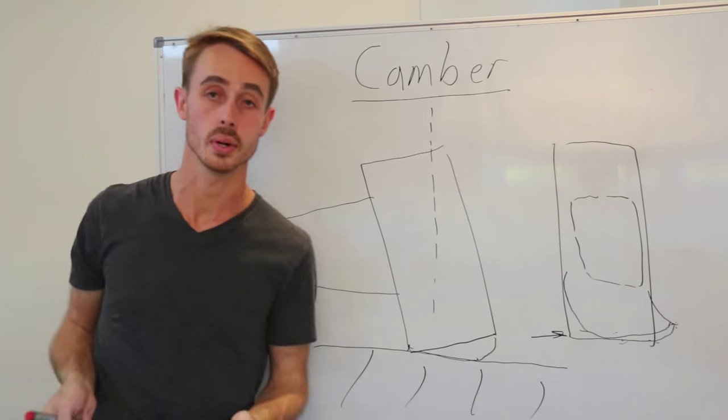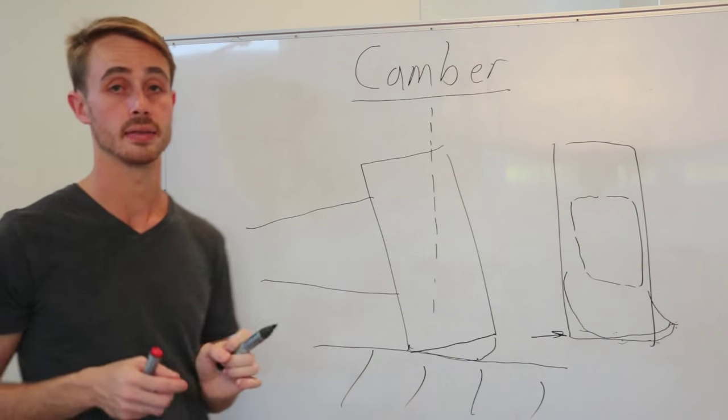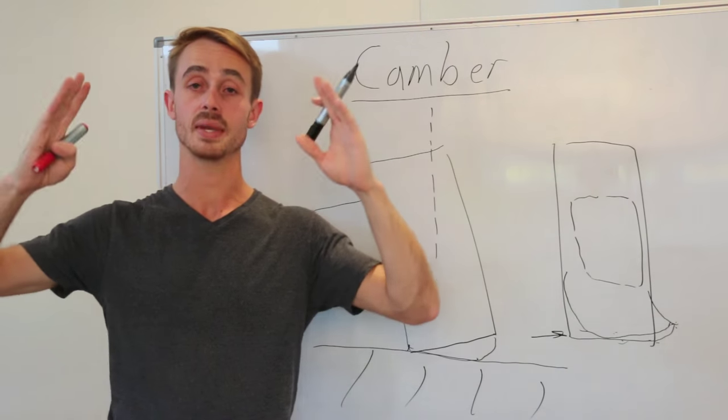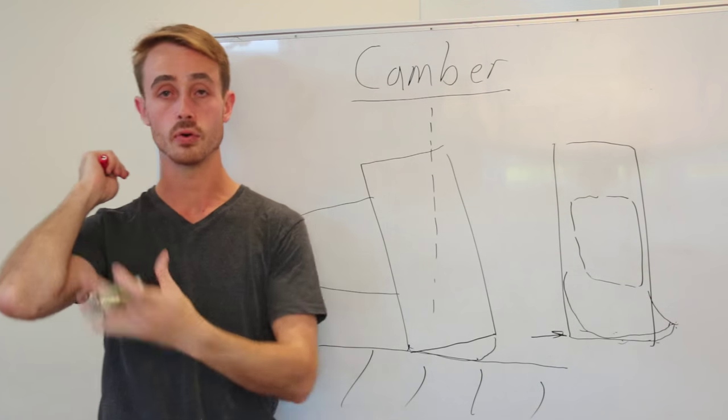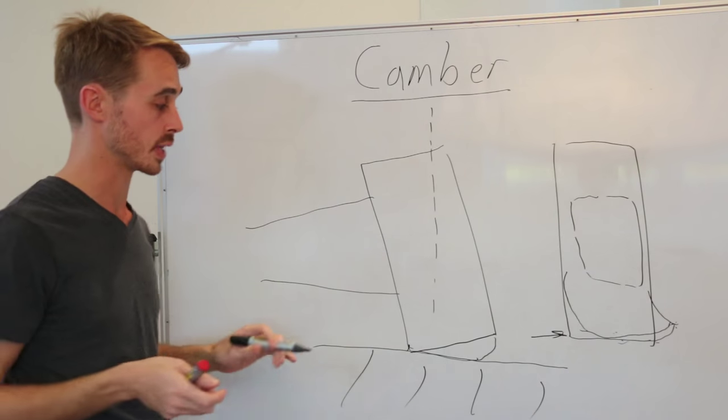Now, you may ask the question, what's happening to the tyre on the other side of the car, which is going to be cambered out the other way and therefore going to be gripping less. Well, this is a two-fold thing.